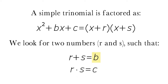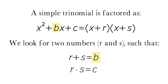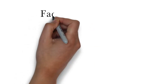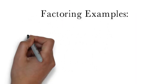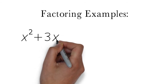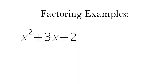Here, b is the coefficient of the second term in the trinomial and c is the constant, which is the last term of the trinomial. Let's work through several examples.